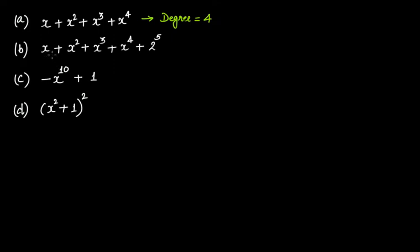In this case we have x plus x squared plus x cubed plus x raised to the power of 4, plus 2 raised to the power of 5. Some of you might say that since this is 2 raised to the power of 5, the degree will be 5.